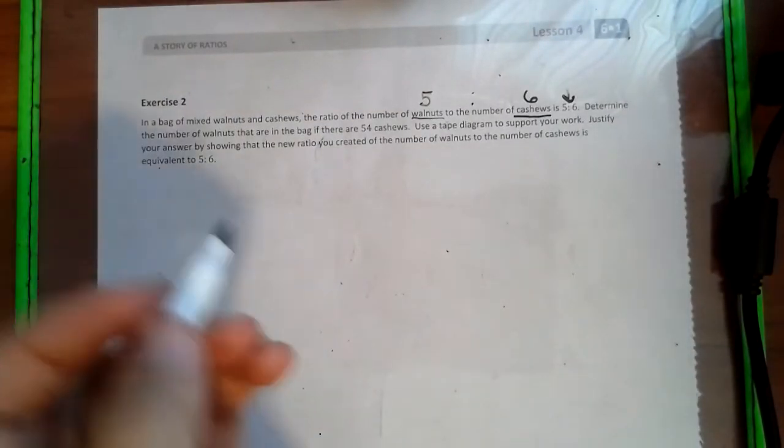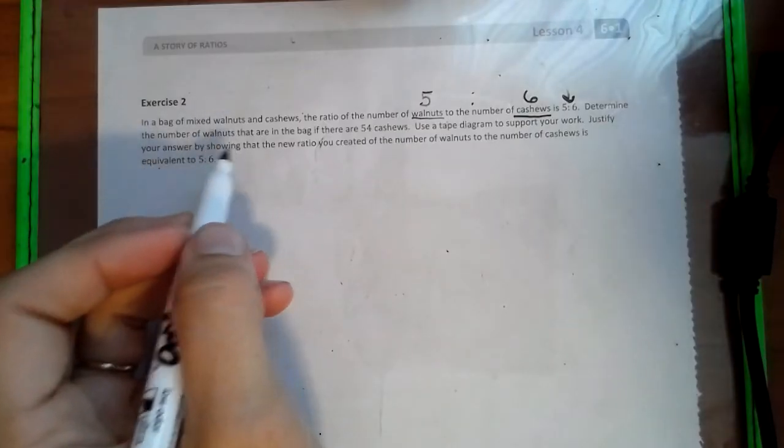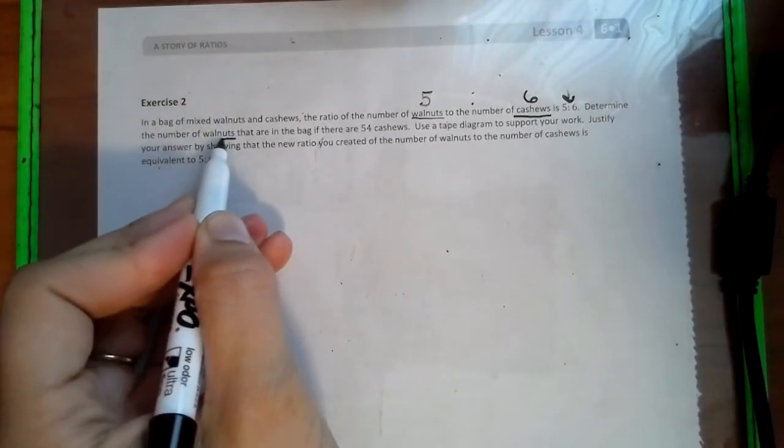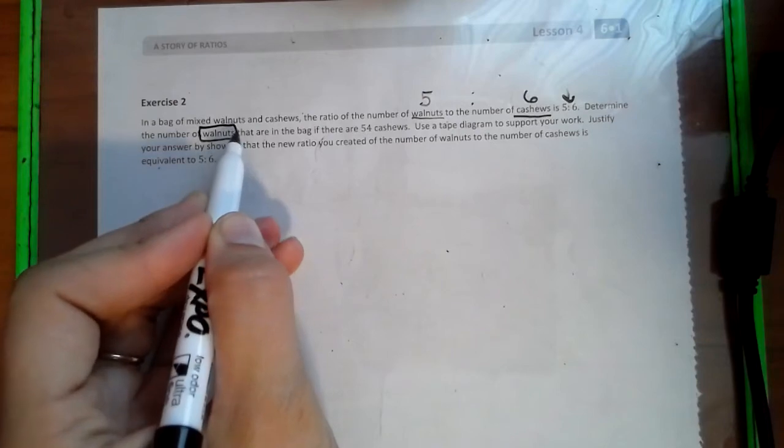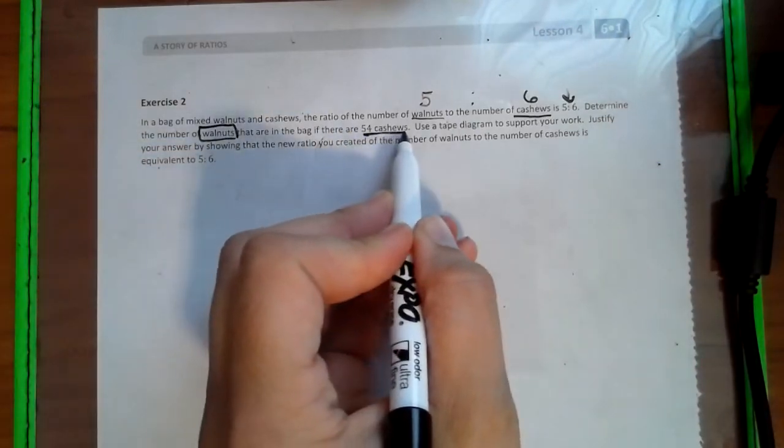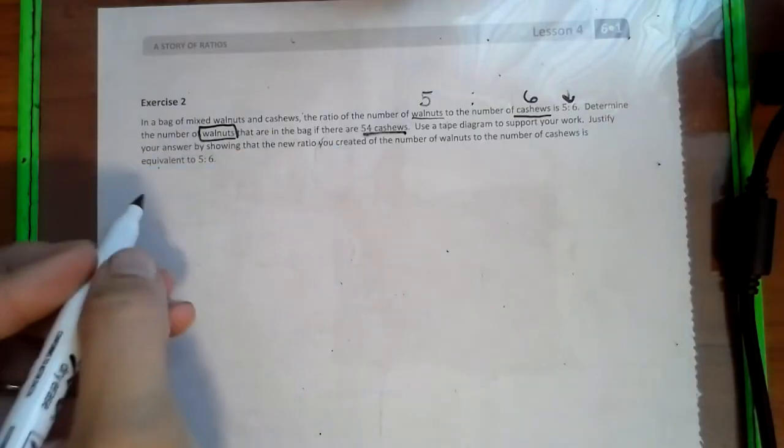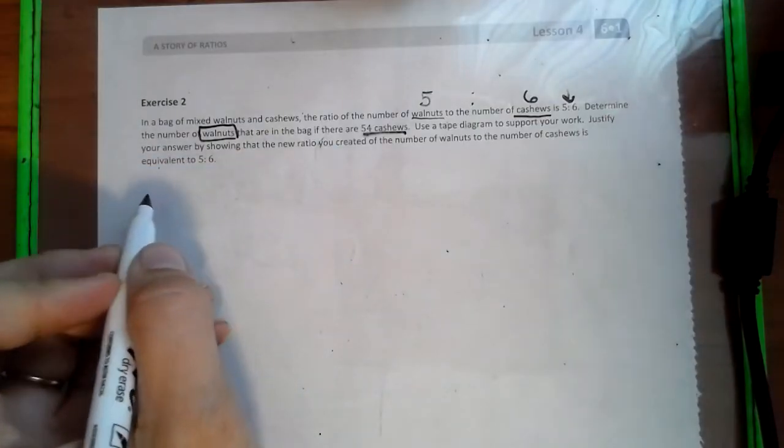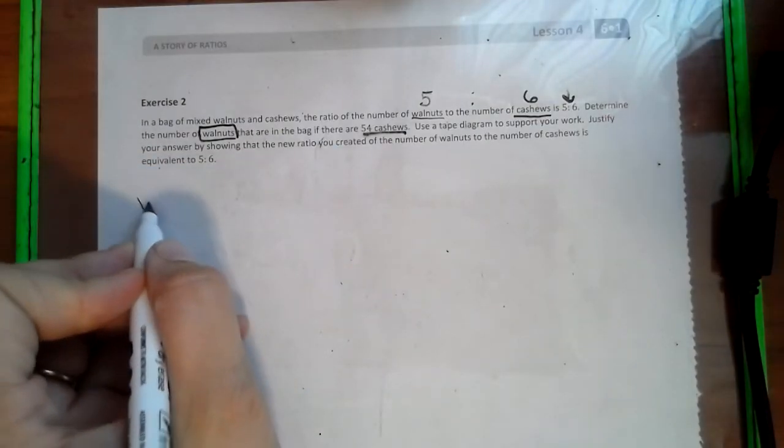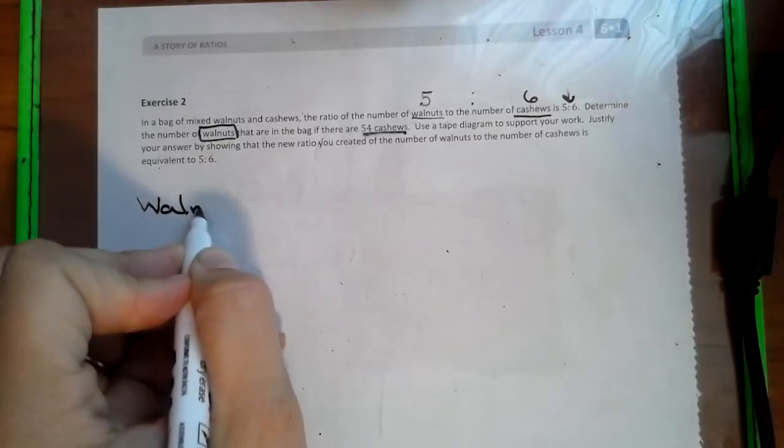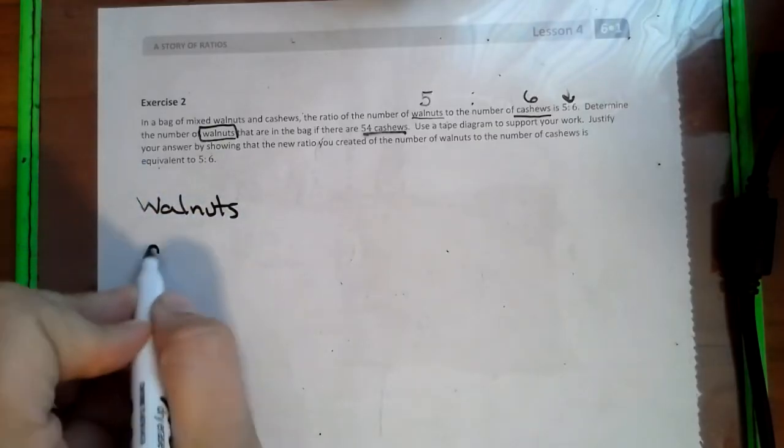So now it says determine the number of walnuts. So this is our missing piece of information if there are 54 cashews. All right, so first thing we need to do is start making our tape diagram. So we have two different things. We have walnuts, cashews.